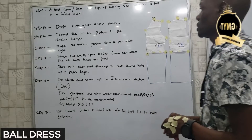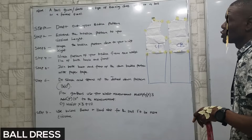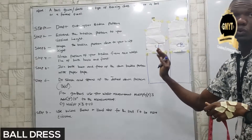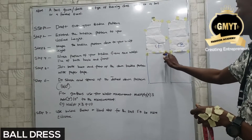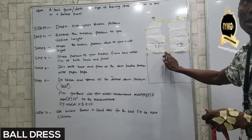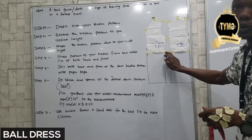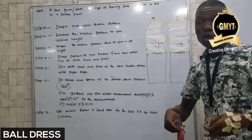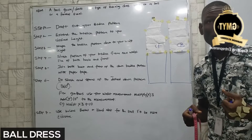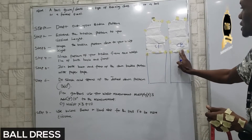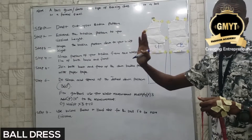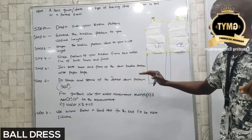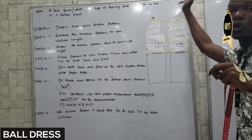Now step three — shape the body pattern down to your waist length. If you are doing the shaping for this particular one, you are stopping at the waistline. Don't go below the waistline. Once you get to your waistline, you stop there. You are picking the full roundness of your waist — how firm you want it — for both CF and CB. The down part of the ball dress is a very loose dress. From the waist up is fitted.